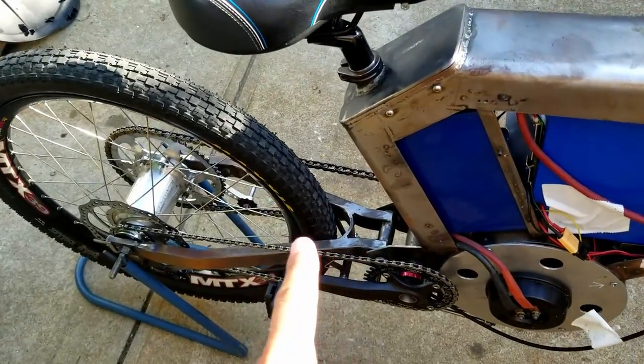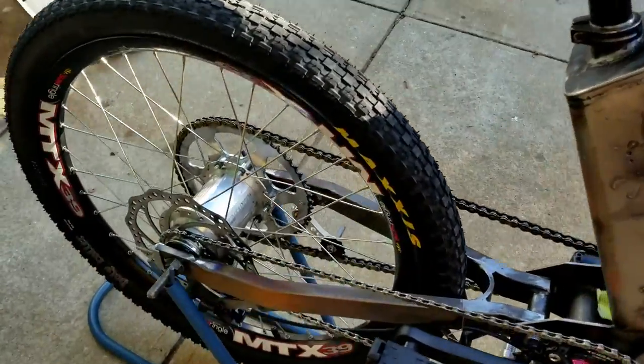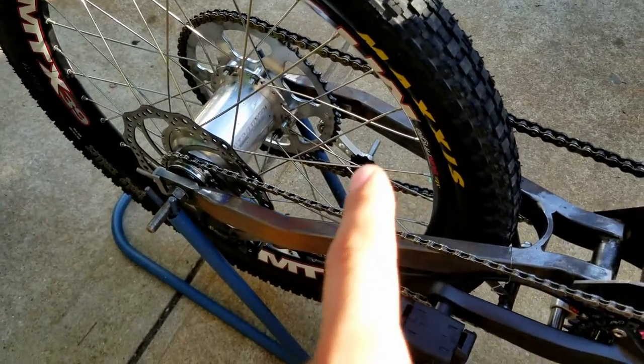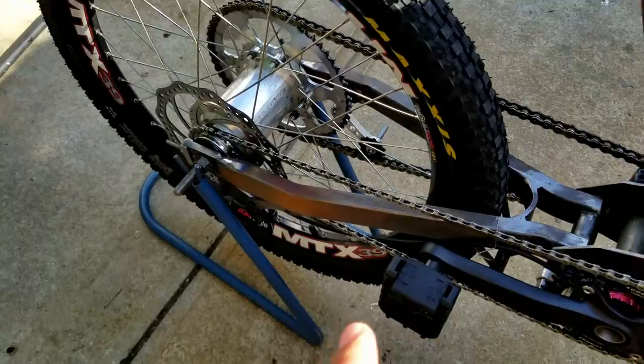We got pedal chain, disc brake, and then we got the motor chain with the little tensioner over there.